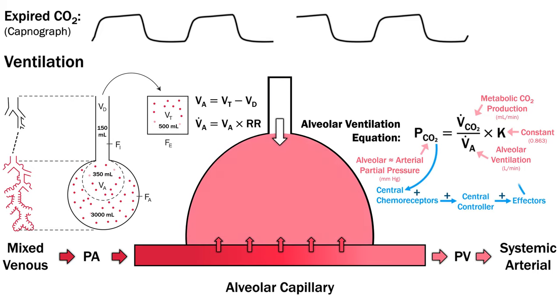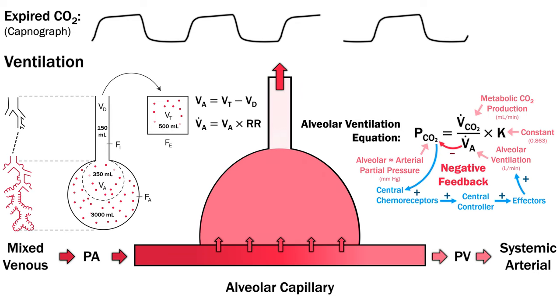I've previously described how respiratory effort is directly controlled by central chemoreceptors in the brain stem that sense CSF pH which is primarily influenced by the partial pressure of CO2. Because respiratory acidosis triggers an increase in ventilation you can see through this equation how it forms a simple negative feedback circuit.